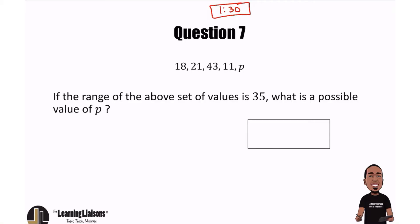So here we go. The range of this set of data here is 35. So what's a possible value of P? Well, let's see what the current range is. Let's see, the lowest value that I see is 11, the highest is 43. So 43 minus 11, that would be 32.